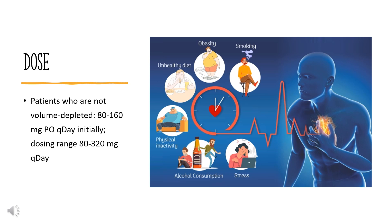Heart Failure: Indicated to reduce risk of hospitalization for patients with heart failure, NYHA class 2–4. Start at 40 mg orally twice daily; may titrate to 80–160 mg twice daily as tolerated. Consider reducing the dose of concomitant diuretics. In clinical trials, the maximum daily dose administered was 320 mg in divided doses.